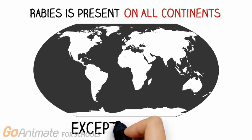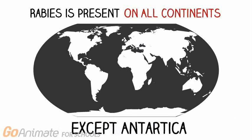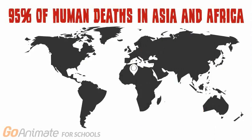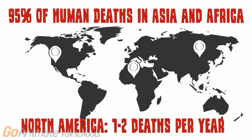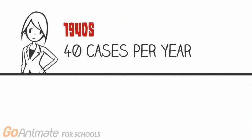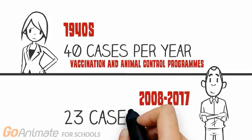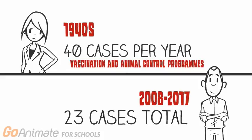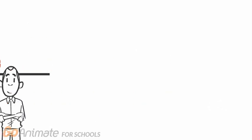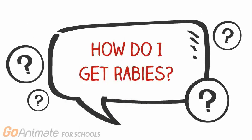Rabies is present on all continents except Antarctica. Over 95% of human deaths occur in Asia and Africa. Since the 1900s, the number of deaths from rabies in North America has fallen from 100 or more each year to just one or two cases. Much of the decline dates from the 1940s when vaccinations and animal control programs were set up. In the early 1940s there were about 40 cases each year, and within the past decade a mere 23 cases of human rabies have been reported.